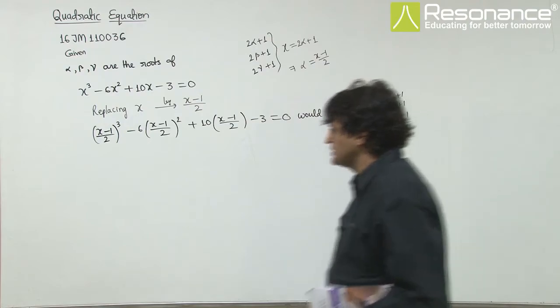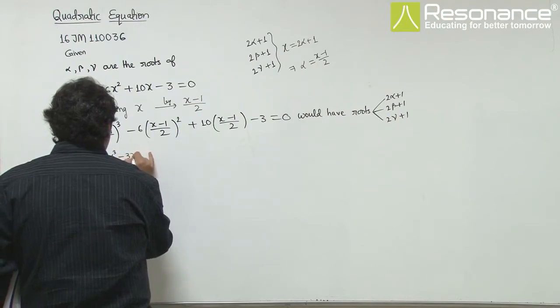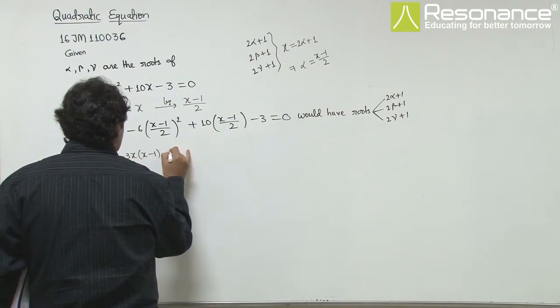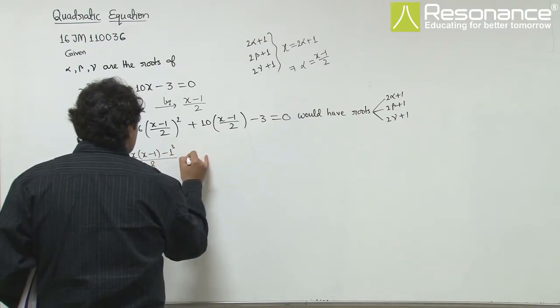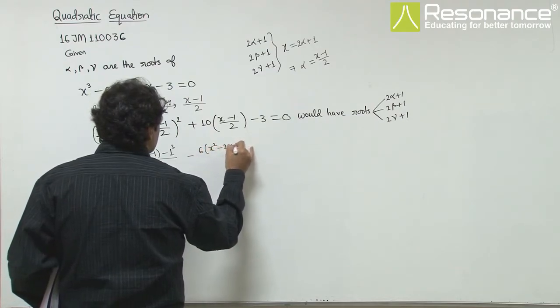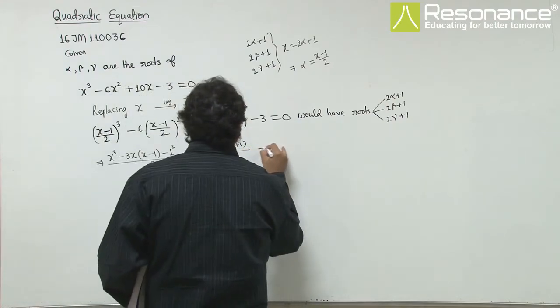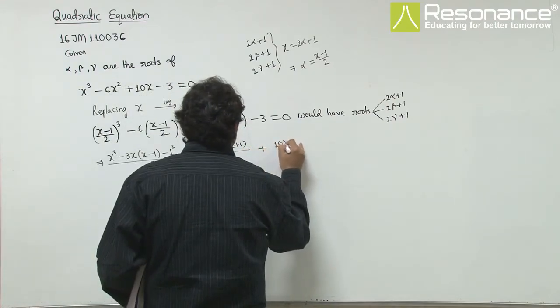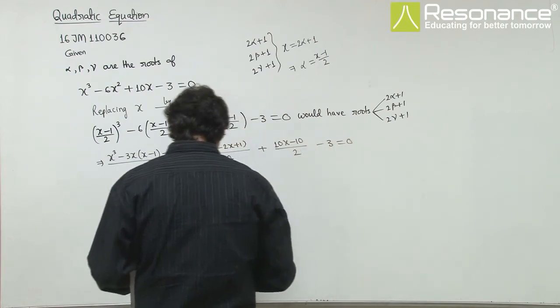So (x-1)³, that is (x³ - 3x²(x² - 2x + 1))/8, minus 6(x² - 2x + 1)/4, this is tan x minus 10 by 2 minus 3 equal to 0, right.